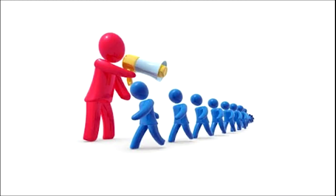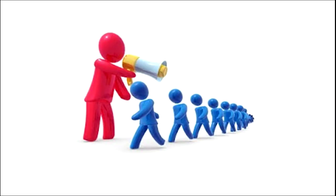Let us move on to the autocratic leadership style. Look at the image in the slide. The red figure is the leader who has a speaker in his hand and is giving out instructions. You can see the blue figures following with their heads bowed down, listening to instructions and following what is being said. This type of leadership where the leader instructs the subordinates is known as autocratic leadership style.